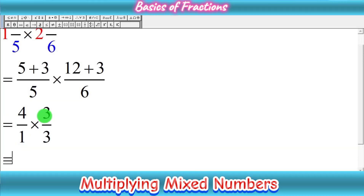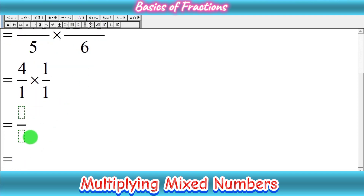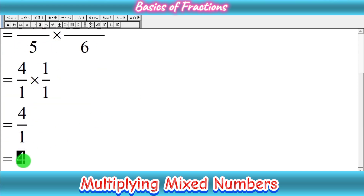Now we have 3 in both a numerator and a denominator, so we can divide both by 3 to get 1 upon 1. Now we simply multiply straight across: 4 times 1 is 4, and 1 times 1 is 1. So 4 divided by 1 equals 4, which is a whole number. This is our final answer — the multiplication of 1 whole 3 upon 5 times 2 whole 3 upon 6 equals 4. We don't need to simplify it further.